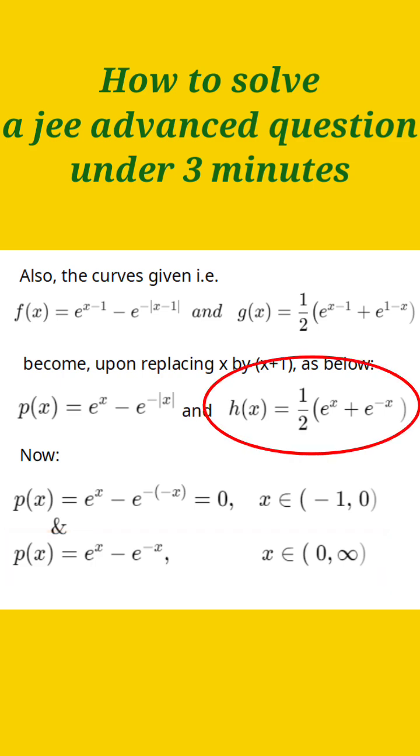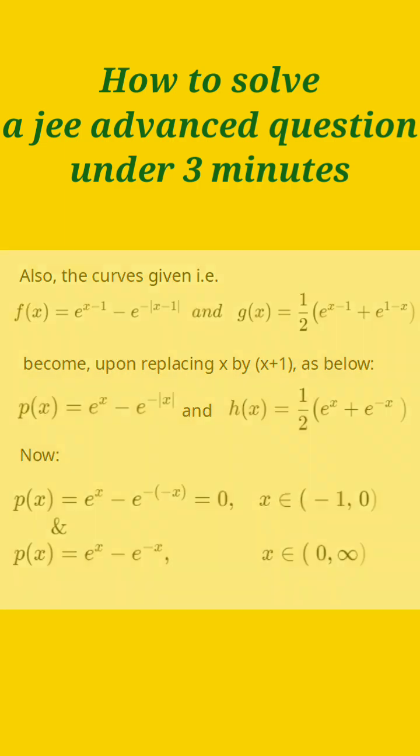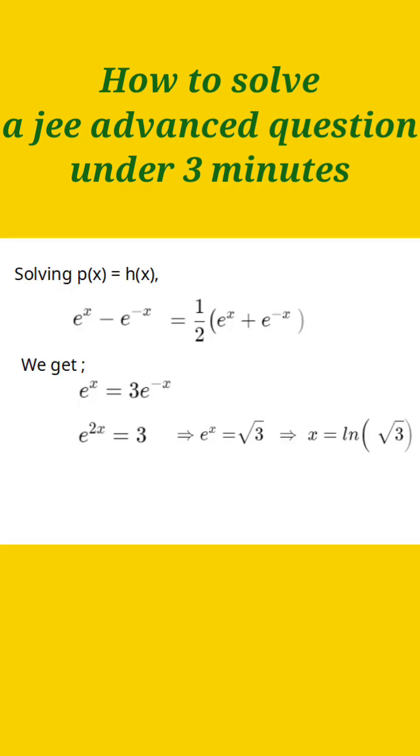Now e to the power x plus e to the power minus x by 2, that is h(x), is always having greater value than p(x). So now we can form two integrals for evaluation of the area required. But before that, we need to find the point of intersection.